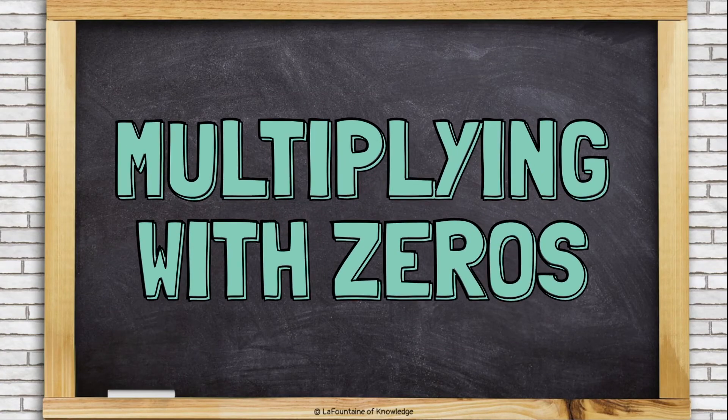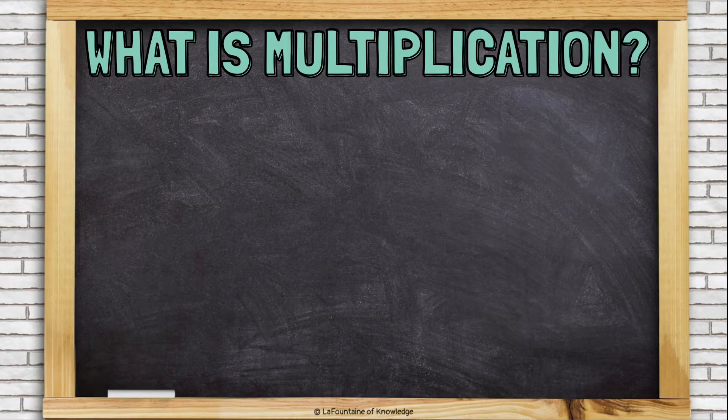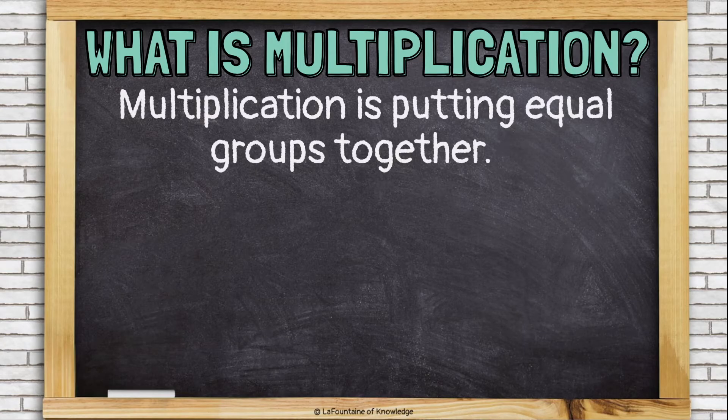Multiplying with zeros. What is multiplication? Multiplication is putting equal groups together.